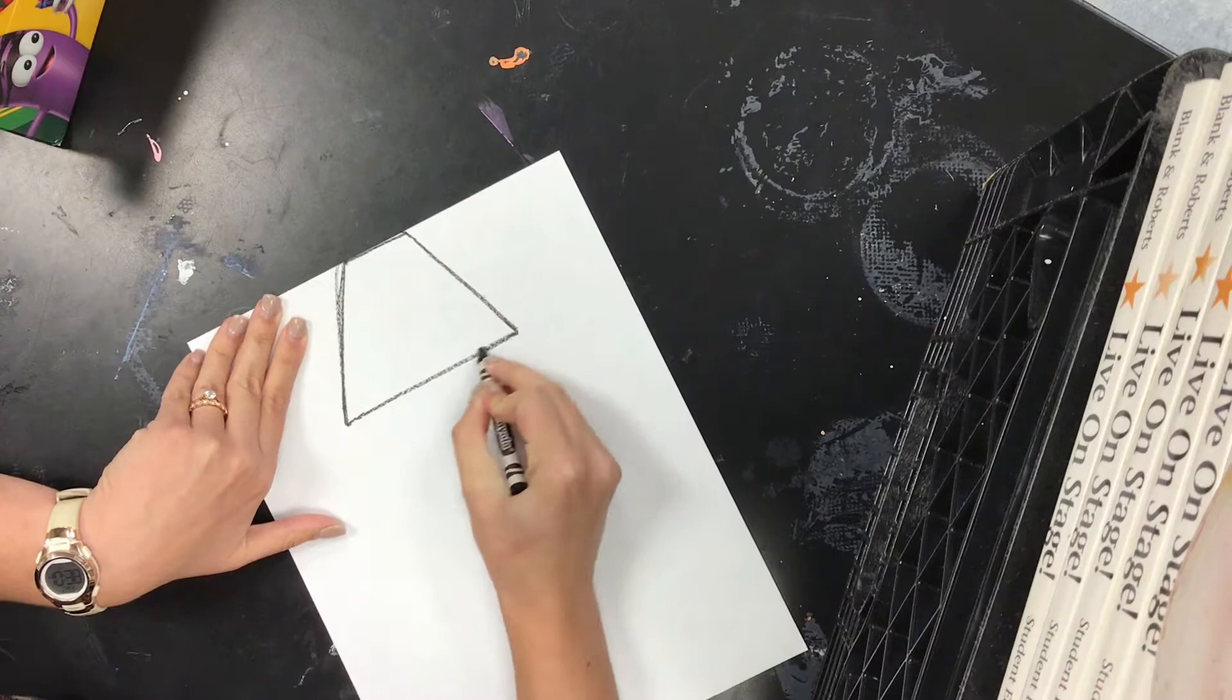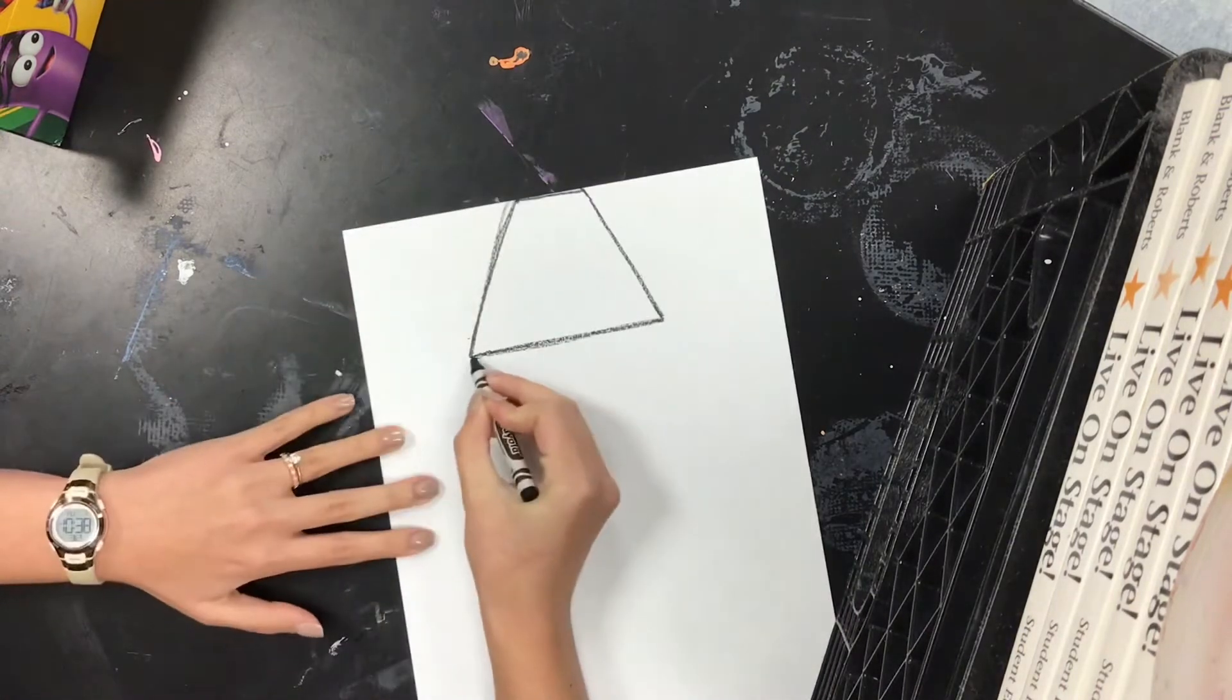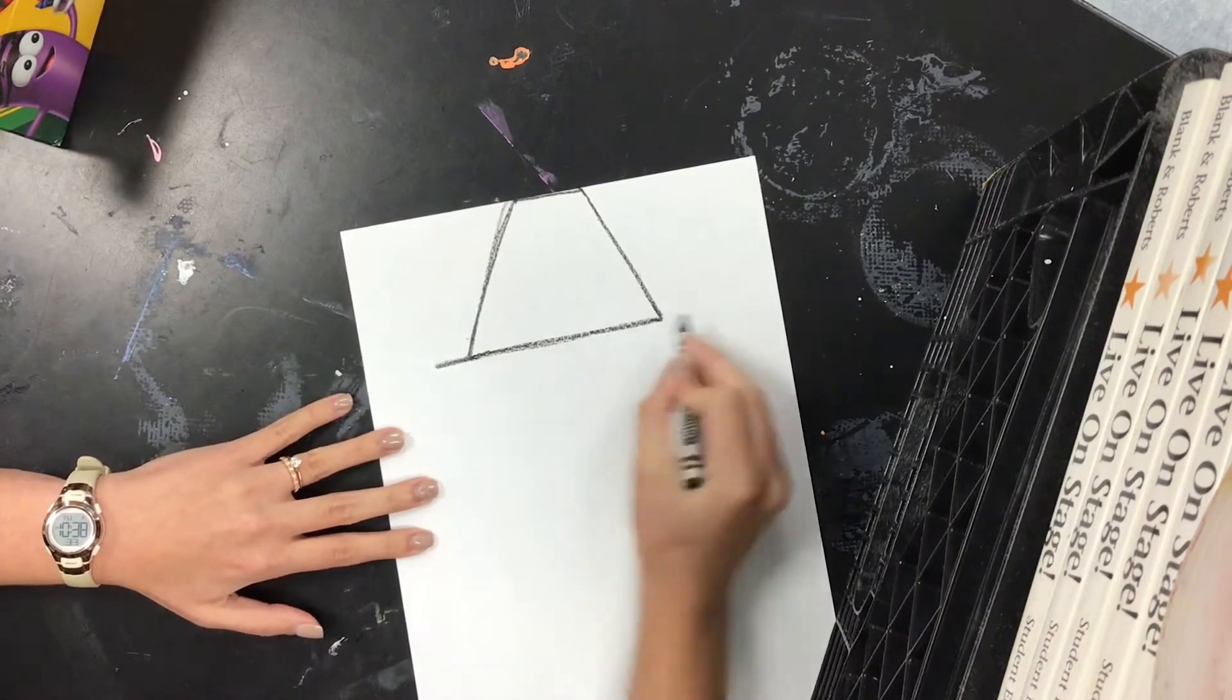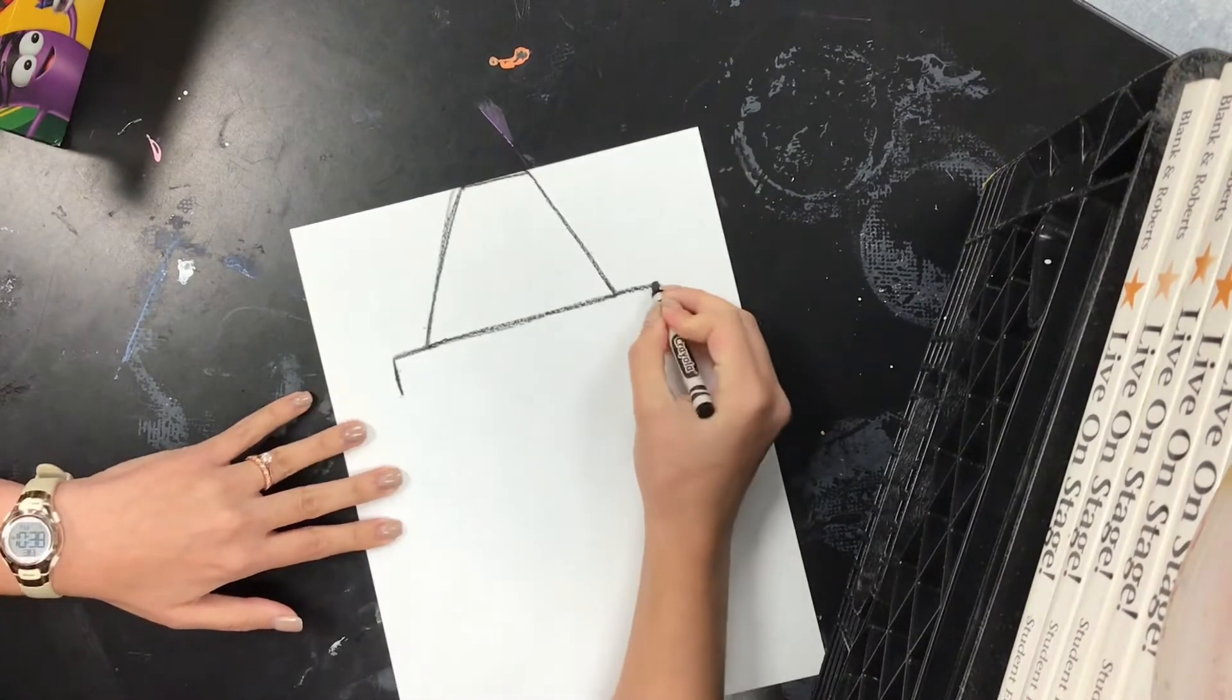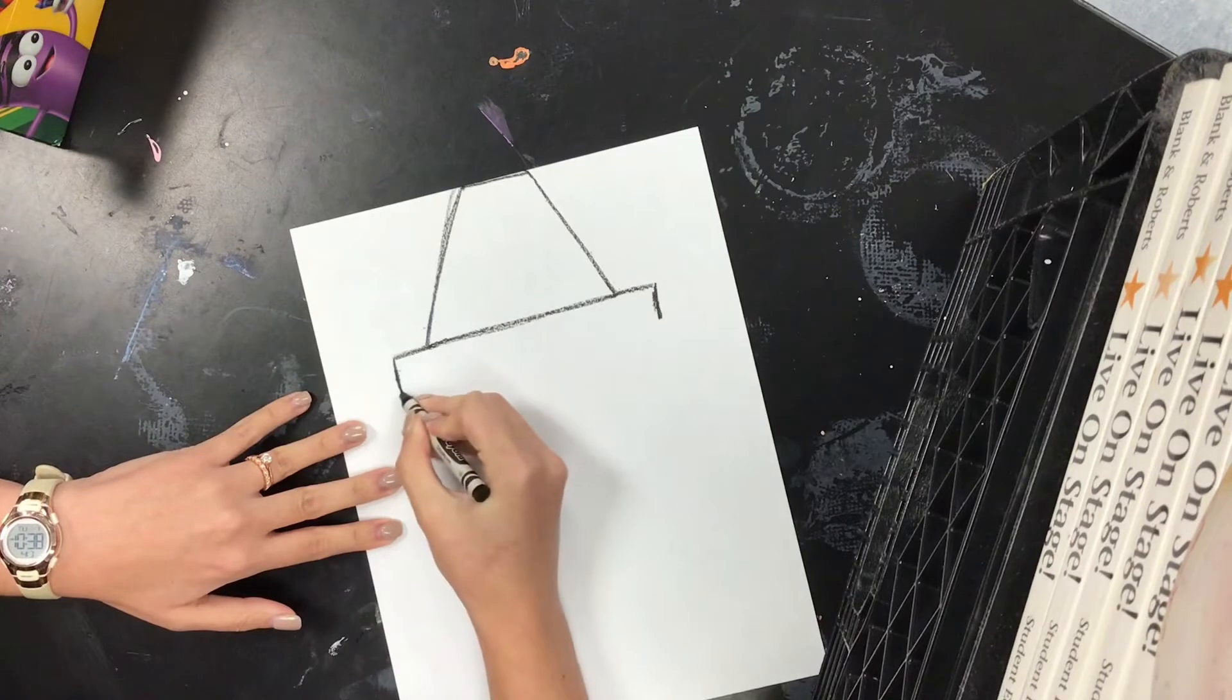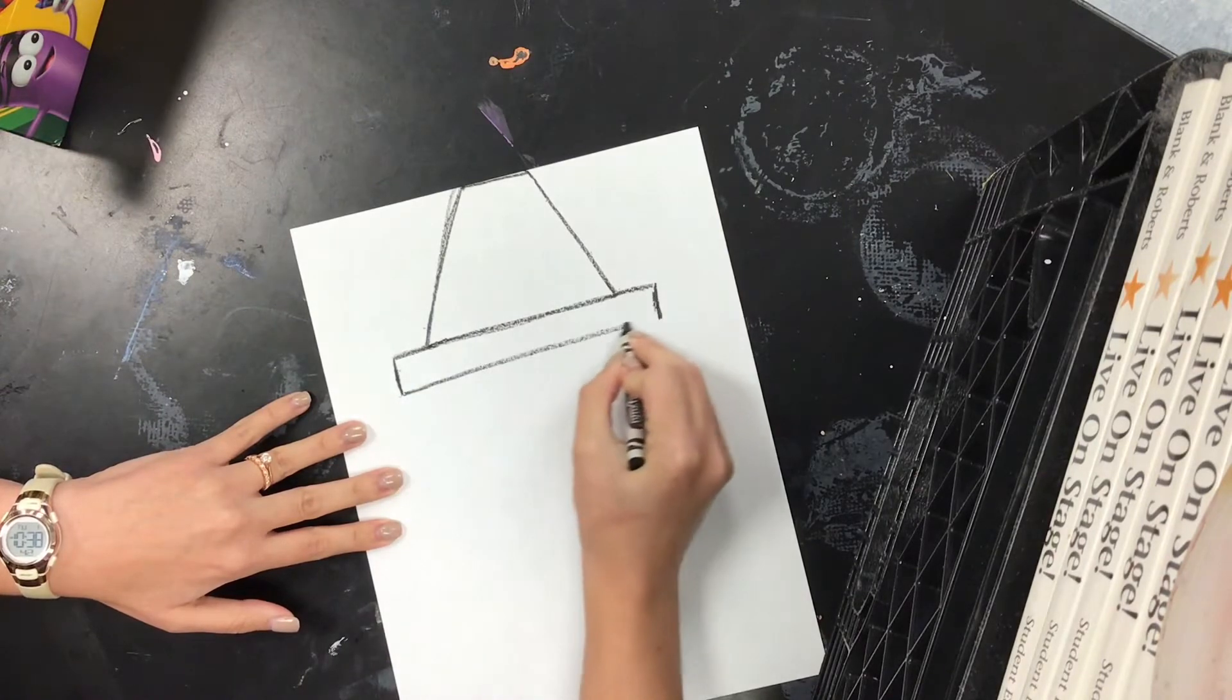Connect the bottom, and we're almost done with the top. Take that line out to the sides just a little bit, and draw a rectangle, long skinny rectangle, at the bottom.